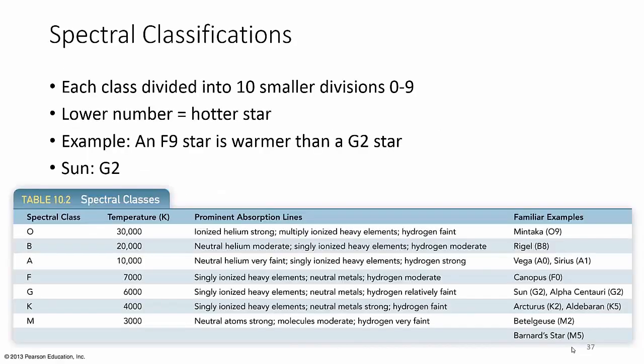Now each of these are subdivided into 10 divisions from 0 through 9. The lower the number, the hotter the star. So an F9 star is warmer than a G2 star.